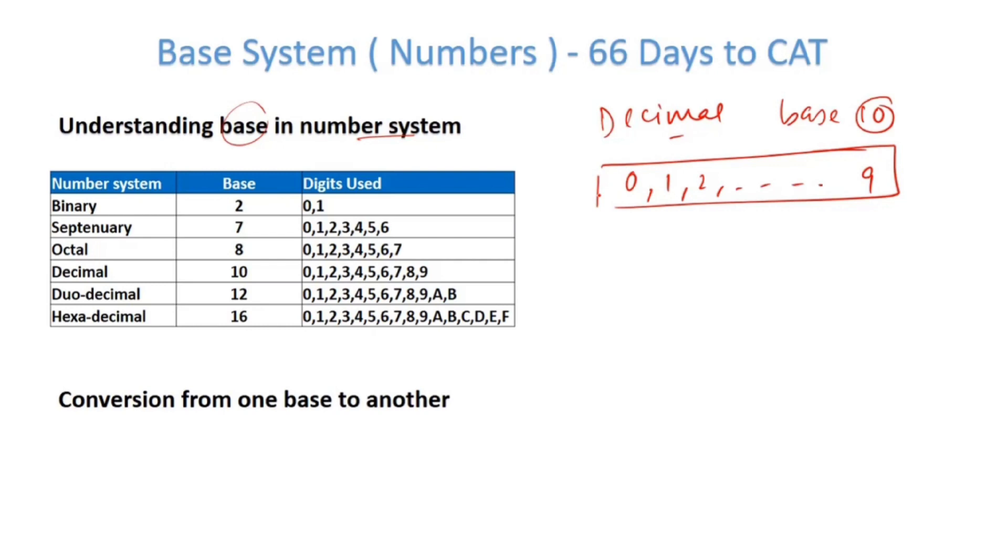Similarly, you also have studied about binary number system or binary base number system in case of computers, where only 0 or 1 is used. So that is binary. There are two digits involved and hence the base is 2. And similarly, there can be other number system also.